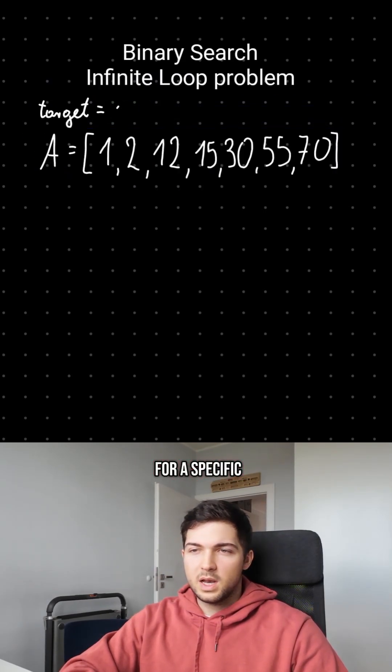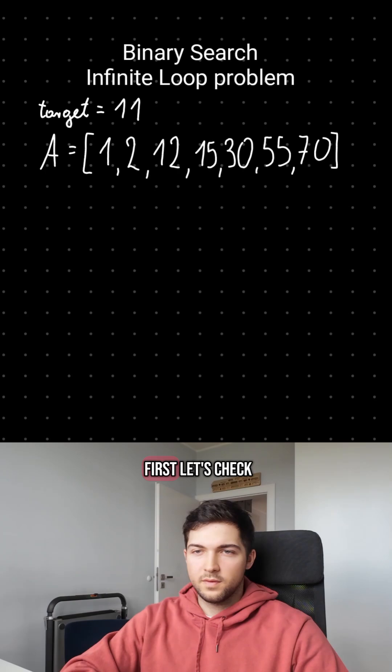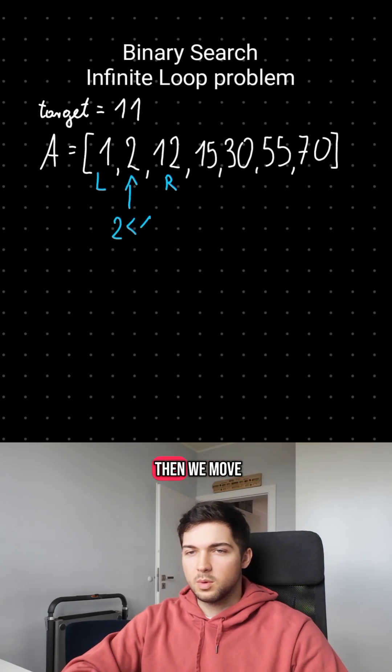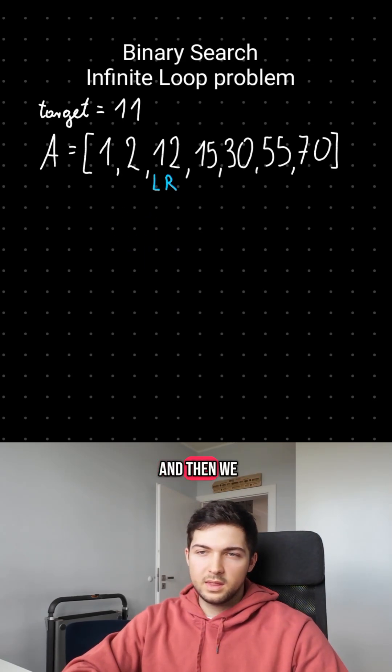Imagine we're looking for a specific element in a sorted array. First, let's check the middle. If it's larger than what we're looking for, then we move to the left. And if it's smaller, then we move to the right. And then we repeat that until our left and right boundaries meet.